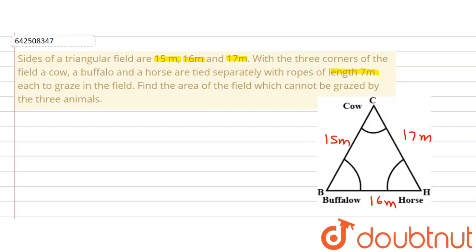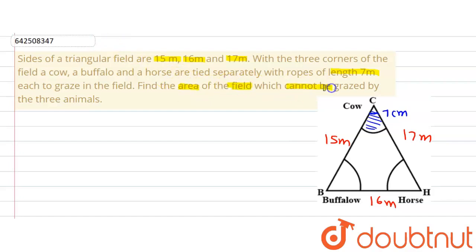That means there is a sector being formed. If you observe, there is a sector which is getting formed and the sector has a radius of 7 meter with an angle that is getting formed. The question further says to find the area of the field which cannot be grazed by the three animals.